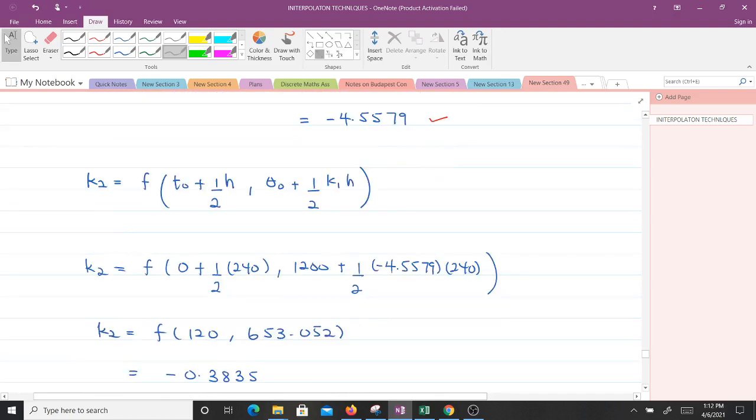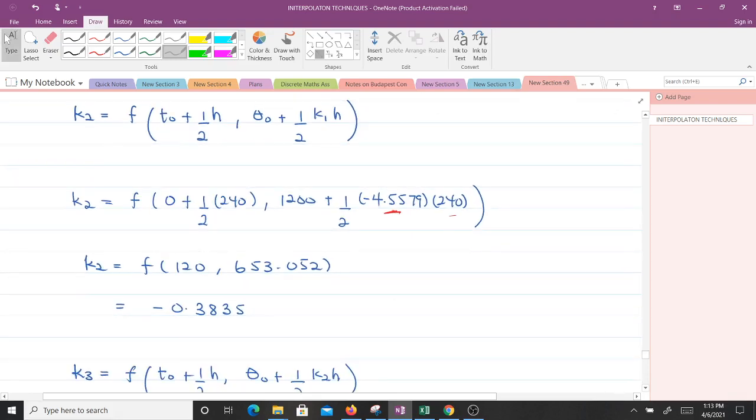Getting K2. K2 is given by F of T naught plus 1 over 2H, then theta naught plus 1 over 2K1H. K2 will be equal to, so T naught is 0 plus 1 over 2H is 240, then theta naught is 1200 plus 1 over 2, this is K1 and this is H. That will give us F of 120, 653.052. When you put this into our F of T theta, you will get negative 0.3835.